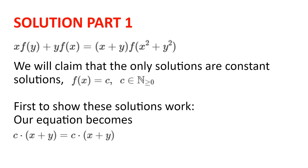Solution. We will claim that the only solutions are constant solutions, so f of x is equal to c, where c is some non-negative integer. Clearly c can't be negative as the function is defined on the non-negative integers to the non-negative integers. First, we will show that these solutions work. Plugging in f of x equal to c into our original equation, we get that on the left-hand side we have x plus y multiplied by c, and on the right-hand side we have x plus y multiplied by c. And so f of x equal to c is a solution.